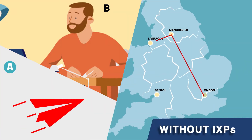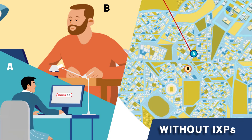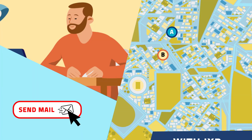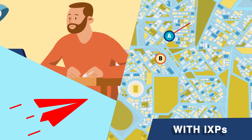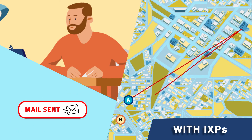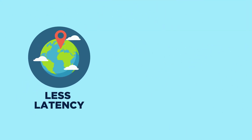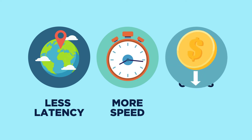Instead of connecting to just an ISP, and then to another, and another, and another, just to reach a place close to you — with an IXP, ISPs connect over a shared platform, and so your data will go straight to the final destination. Allowing local content to stay local, reducing latency, and speeding up data transfer. And, not a minor matter, it reduces costs.